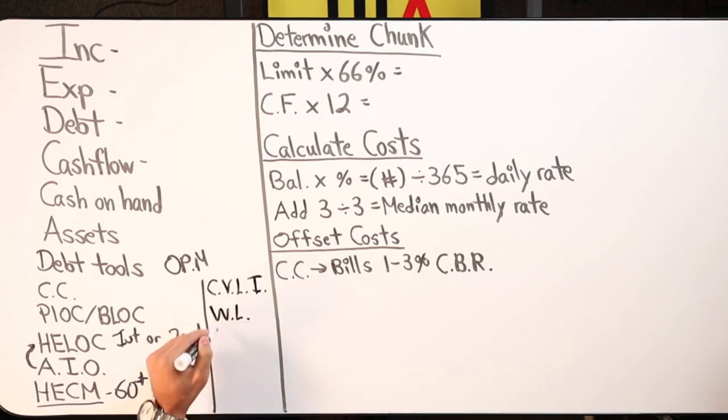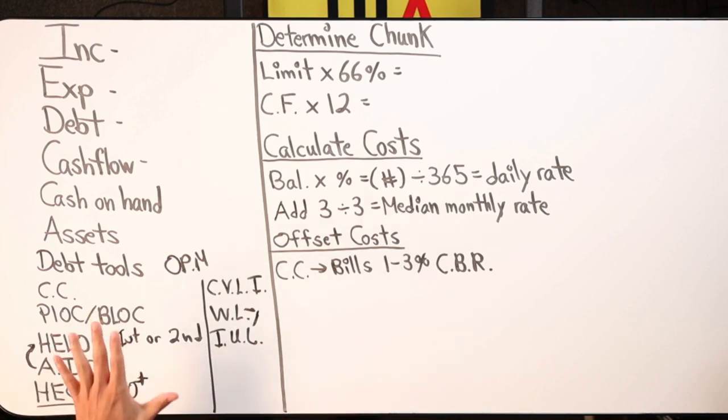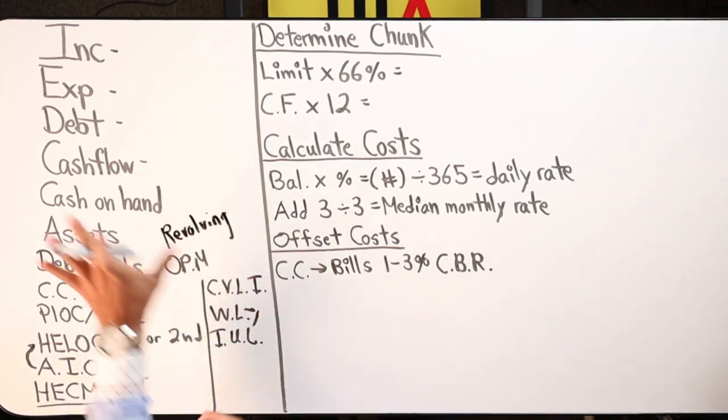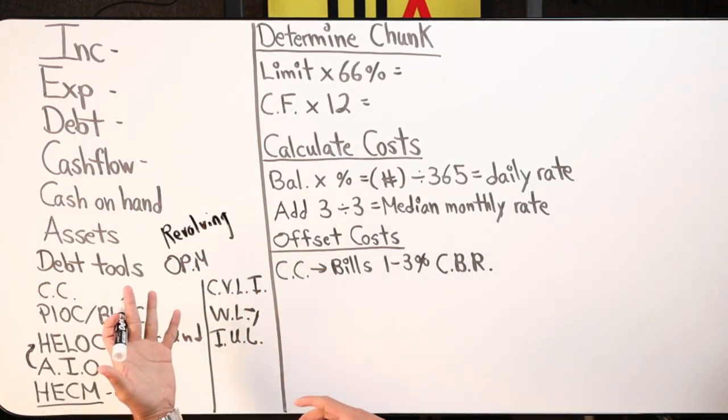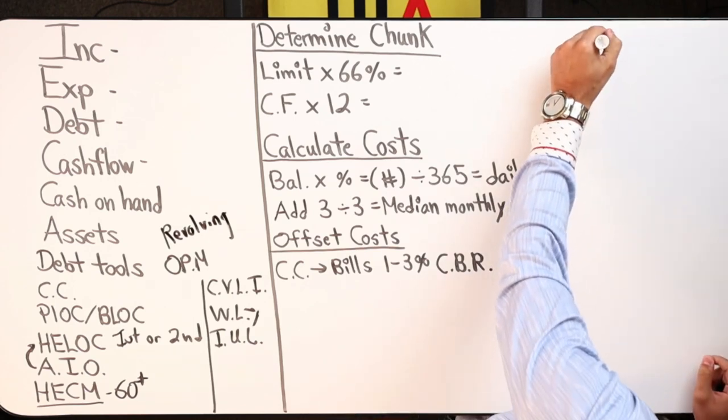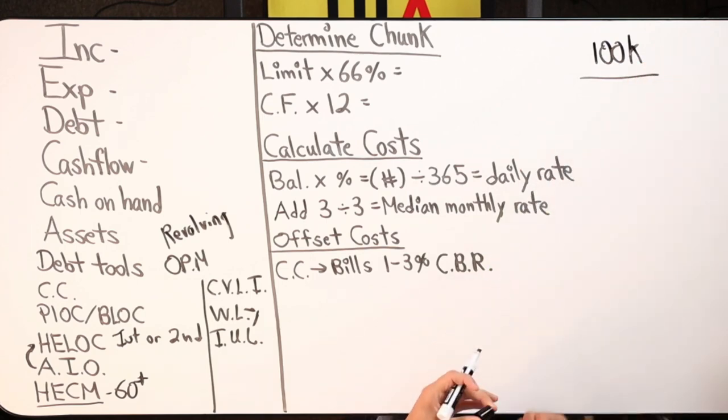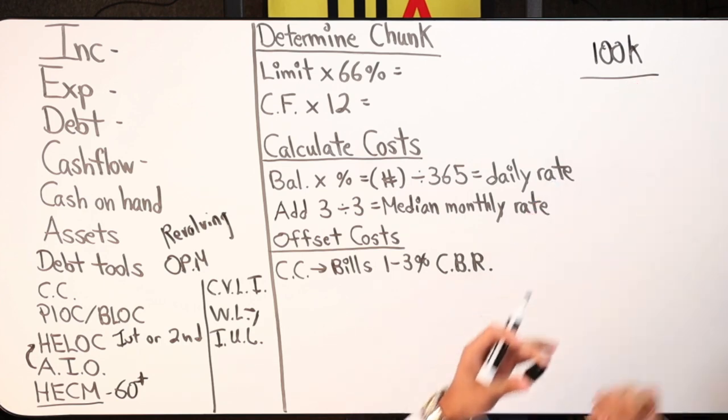Then you've got HECMs, stands for Home Equity Conversion Mortgage. It's actually an insurance product, has more safety than a second position HELOC. You don't have to worry about this getting canceled, shut down, or frozen on you because it's an insurance product. It's actually only available for people 60 plus or higher.